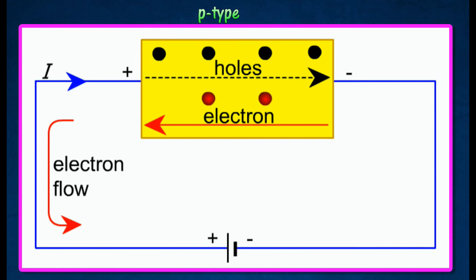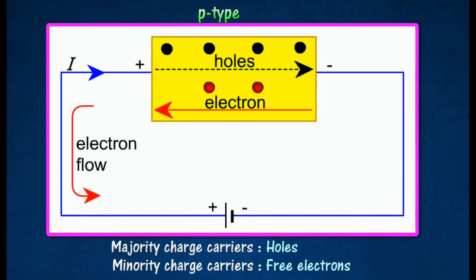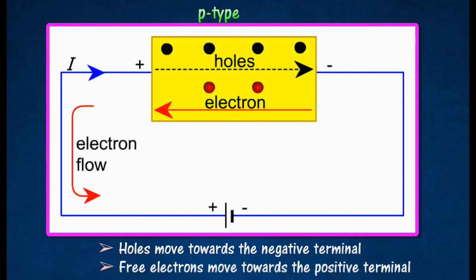In P-type semiconductors, current flow is produced largely by movement of holes, and to a lesser extent the movements of free electrons. Holes appear to move towards the negative terminal of the battery, while free electrons move towards the positive terminal.